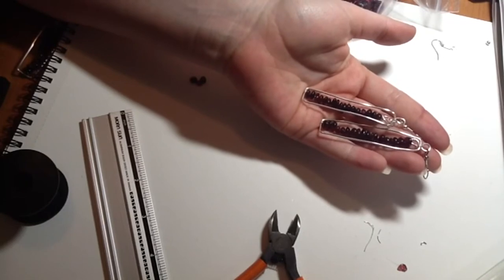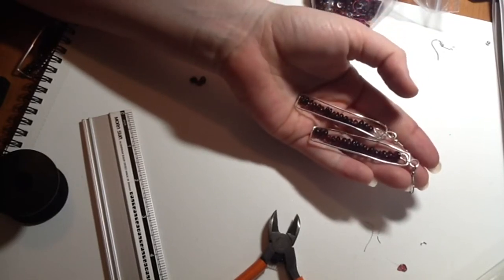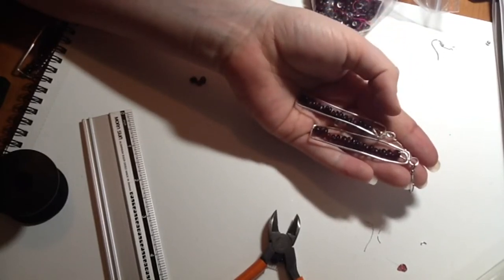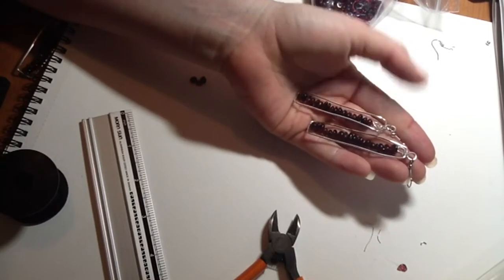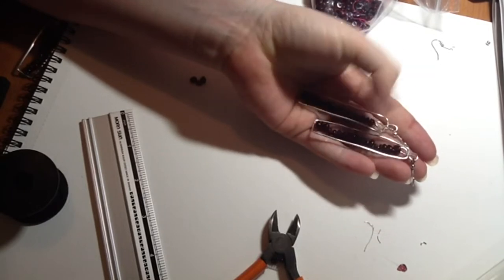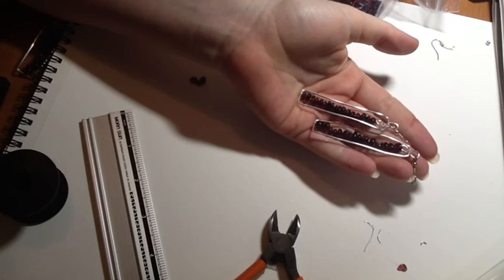We'll need about 6 inches or 15 centimeters of 26 gauge wire because that's what we're going to use to do the beaded section in the middle. We're going to need a couple of earring hooks.